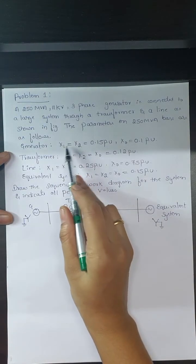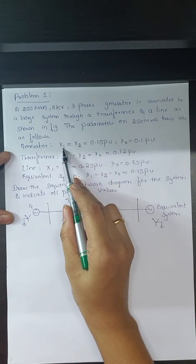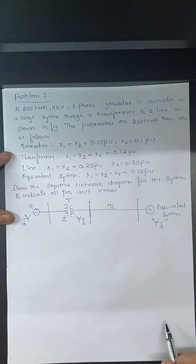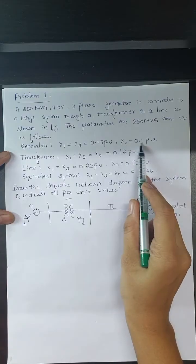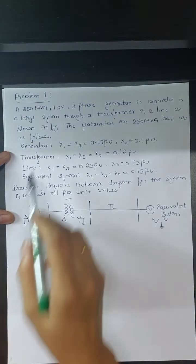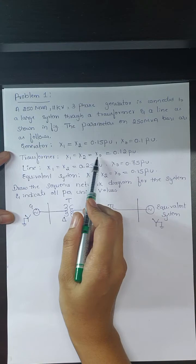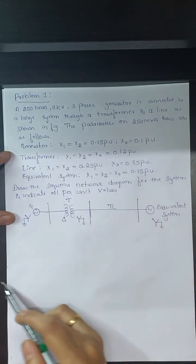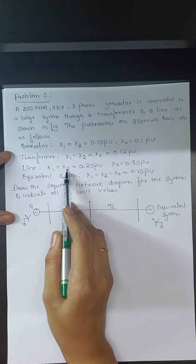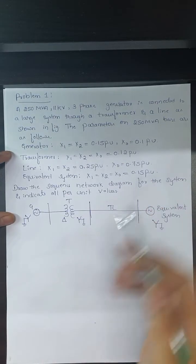For the generator: X1 (positive sequence reactance) and X2 (negative sequence reactance) are both equal to 0.15 per unit, and zero sequence reactance X0 is equal to 0.1 per unit. For the transformer: positive, negative, and zero sequence reactances are all equal to 0.12 per unit. For the transmission line: positive and negative sequence reactances are 0.25 per unit, and zero sequence reactance is 0.75 per unit.